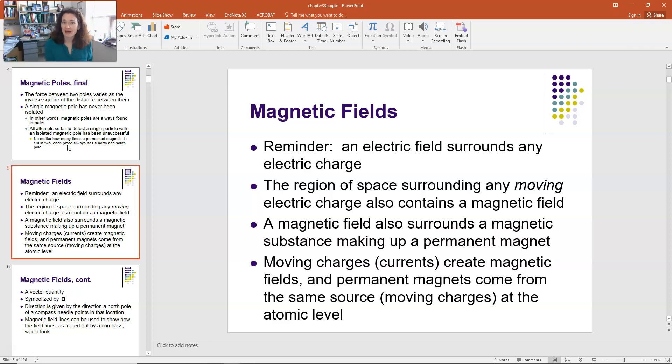Now, permanent magnets, if you really delve deep, and we'll talk more about this later, actually do come from the same source, which is the moving charges at the atomic level. So it's the orbits, for example, of the electrons around the nucleus that are creating magnetic moments at the atomic level that then give rise to permanent magnetic moments for the material as a whole.